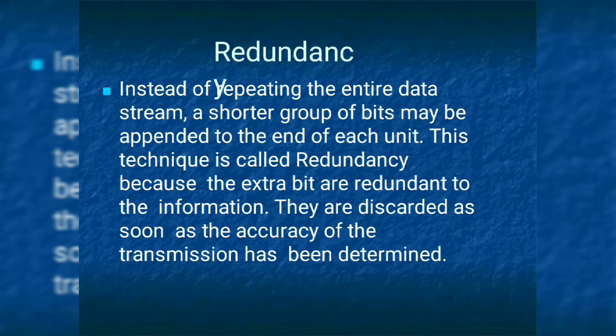Let us discuss the meaning of redundancy. Instead of repeating the entire data stream, a shorter group of bits may be appended to the end of each unit. This technique is called redundancy. Extra bits are appended to the entire data unit as a shorter group of bits in order to recognize and detect the errors. Once accuracy is achieved at the receiver side, whatever the appended bits will be there, those bits are discarded.